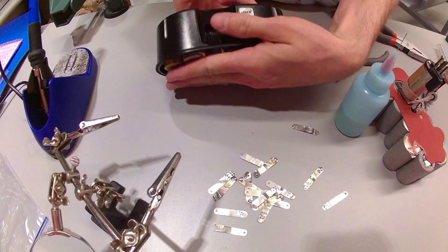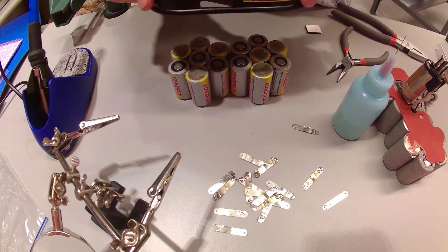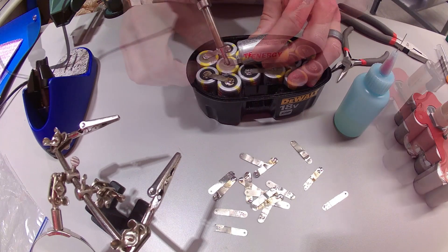And then once you're done with the top, you flip it over here out of the case so that you can solder up the bottom. Then once the bottom's done, you flip it over and put it back in the case so that you can solder up this number 15 cell here on top.